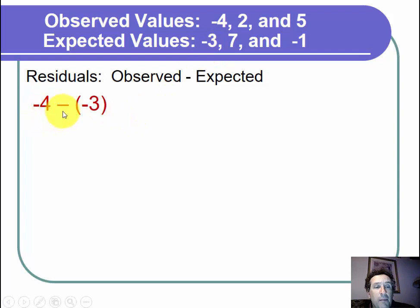Negative 4 minus negative 3. When we do minus a negative, those two minus signs become a plus sign. We can write this as negative 4 plus 3. Now if we're taking a negative number and adding a positive number, that's the same thing as subtracting two positive numbers and then picking the sign of the largest of the positive numbers.